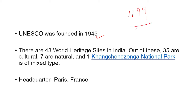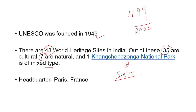The total World Heritage Sites of UNESCO — if we consider cultural and natural combined, it is mixed. The name of the mixed site is a national park. The national park referred to is in Sikkim. UNESCO's headquarters is in France.